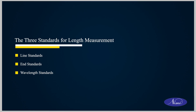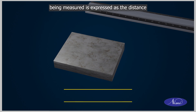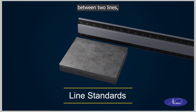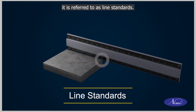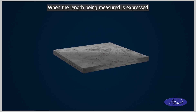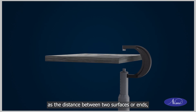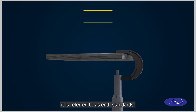The three standards for length measurement are line standards, end standards, and wavelength standards. When the length being measured is expressed as the distance between two lines, it is referred to as line standards. When the length being measured is expressed as the distance between two surfaces or ends, it is referred to as end standards.